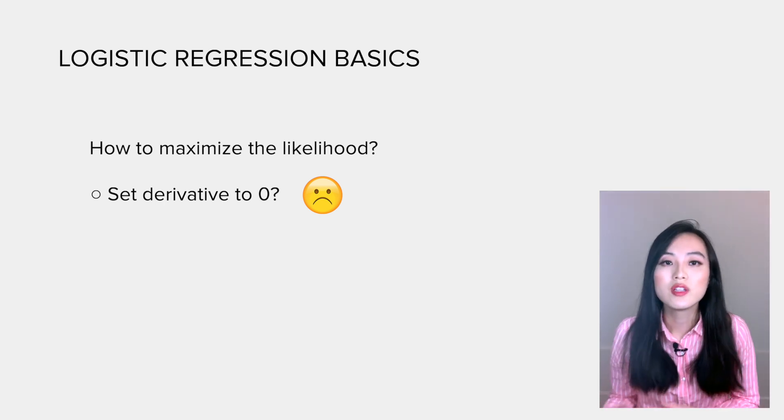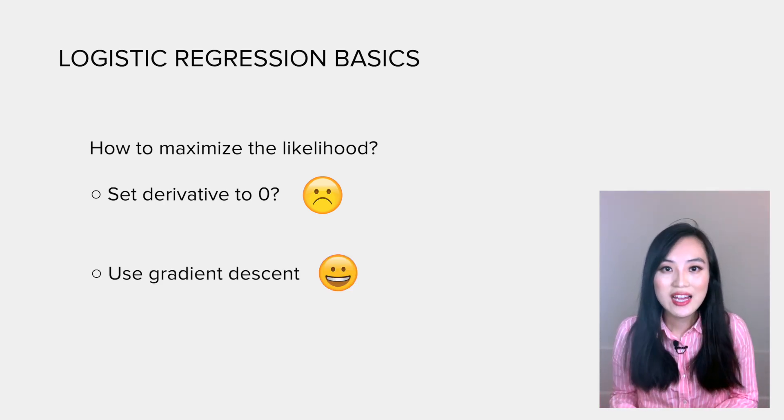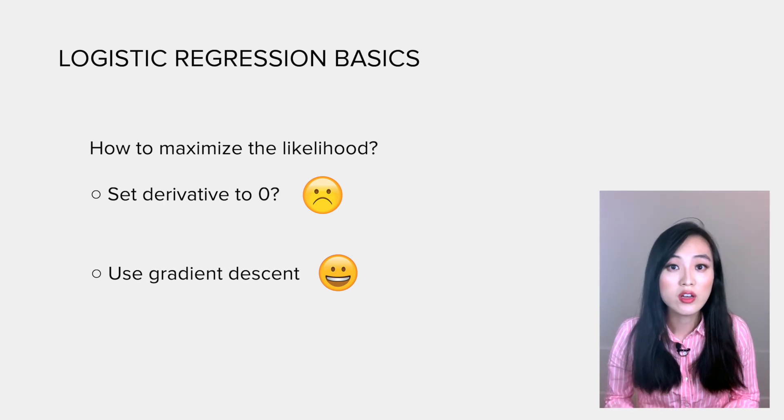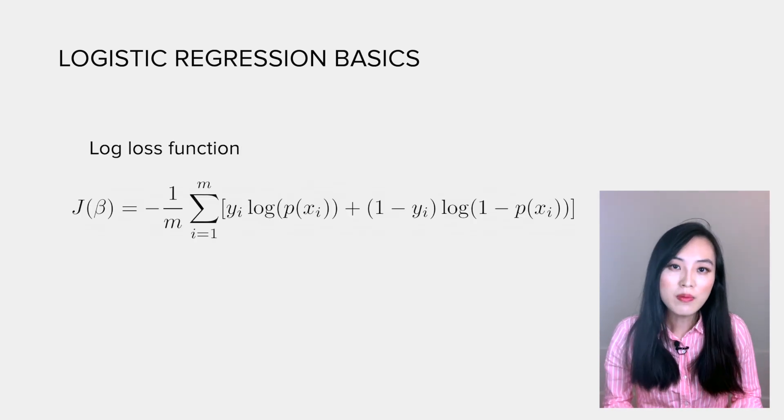So we'll take a different approach using gradient descent to minimize the log loss function. Let me first show you the log loss function. It's actually just the opposite of the log likelihood function.